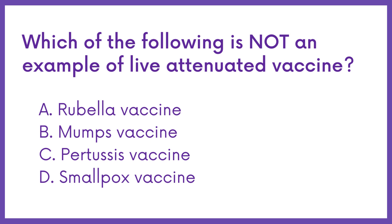Which of the following is not an example of a live attenuated vaccine? A. Rubella vaccine. B. Mumps vaccine. C. Pertussis vaccine. D. Smallpox vaccine.